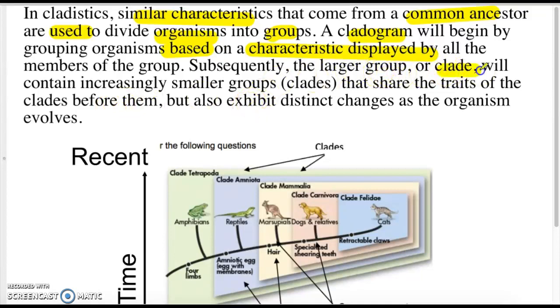A cladogram will begin by grouping organisms based on characteristics displayed by the entire group. Subsequently, a larger group, or clade, will contain increasingly smaller groups that share the traits of the clades before them, but also exhibits distinct changes as the organisms evolve.